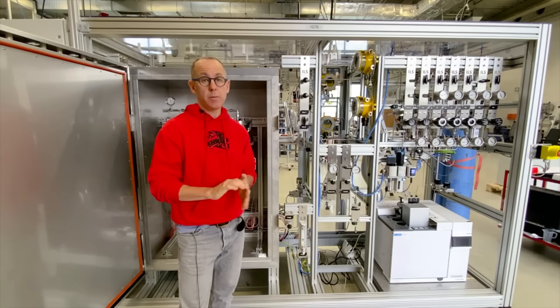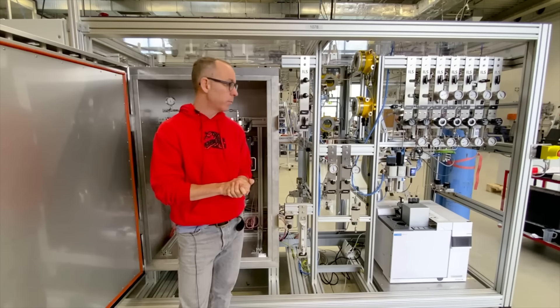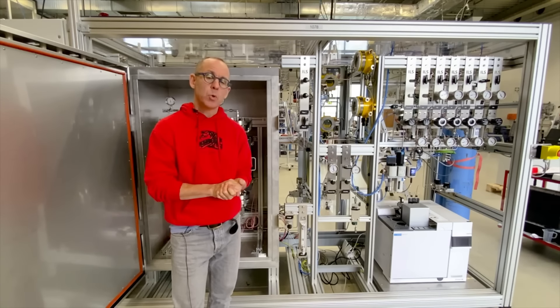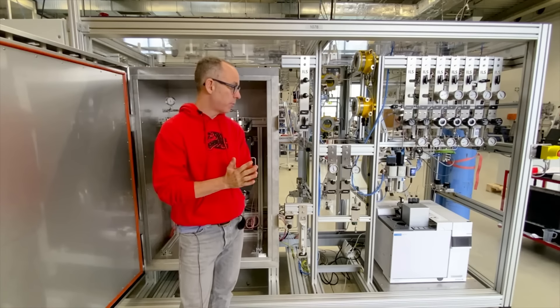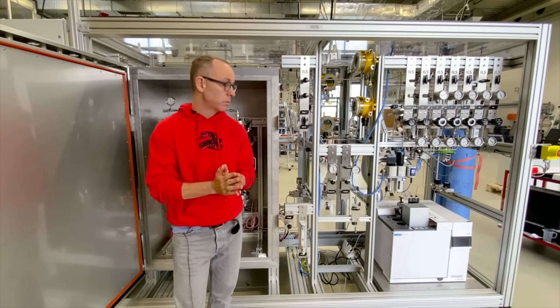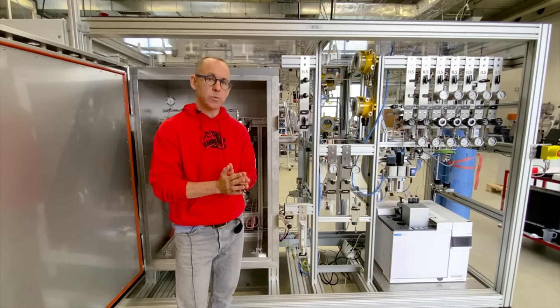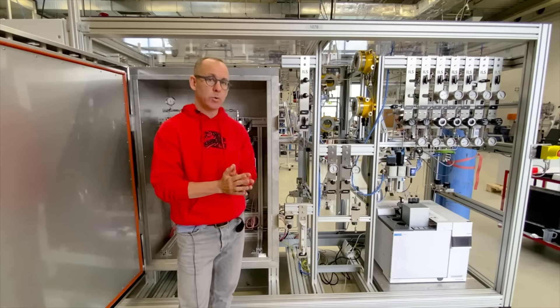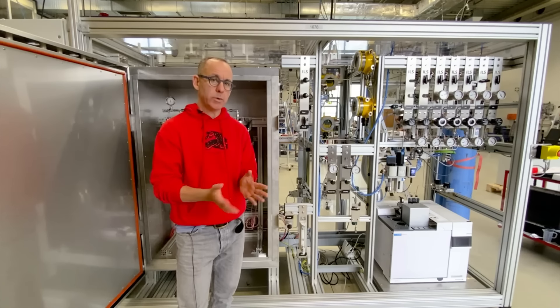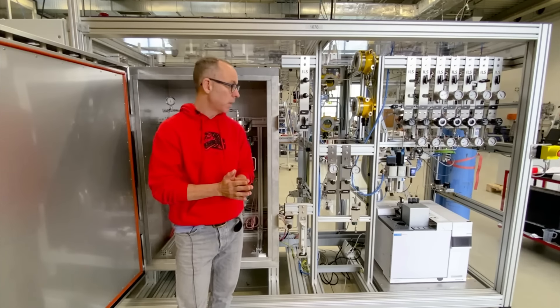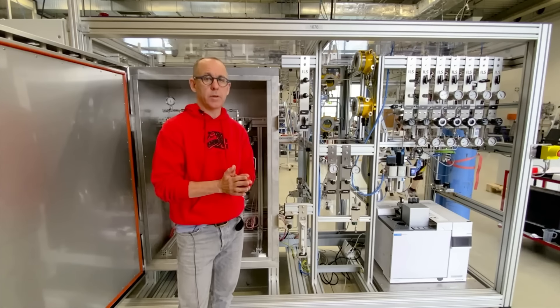The unit is fully automated on the Siemens S7 system and we use our ILS workflow manager to help the unit be operated with basically the click of the mouse. You can generate multi-step recipes very easily this way and it automatically pulls in the data from the GC and combines it with the process data from the Siemens system, giving the user a complete overview of all the relevant catalyst performance parameters.